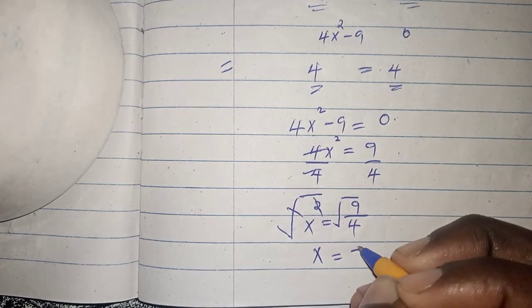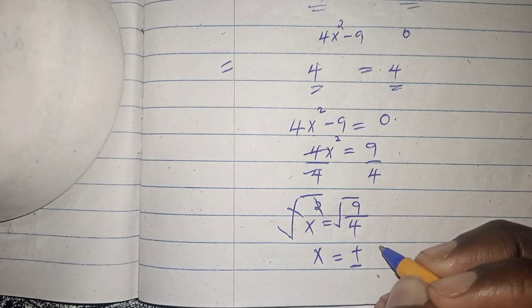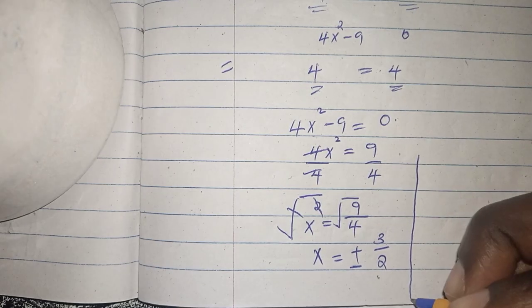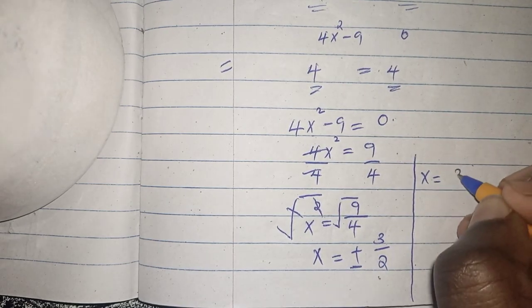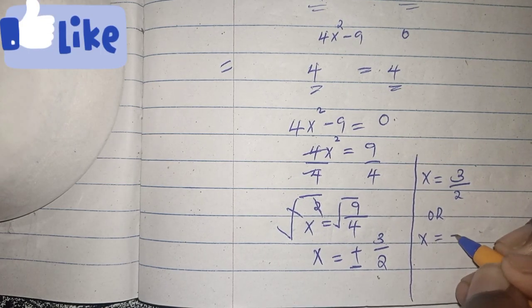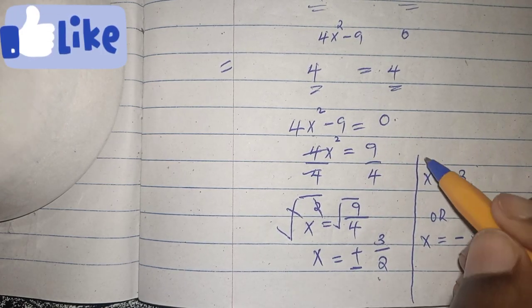And x equals plus or minus, this becomes 3 over 2. So we have two values of x: x equals 3 over 2, or x equals negative 3 over 2. So this is our final answer.